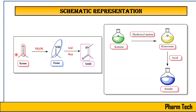So initially, what we have is a ketone. When we add hydroxylamine to the ketone, there will be a formation of an oxime. And when we add acid to the oxime, it converts into the amide.